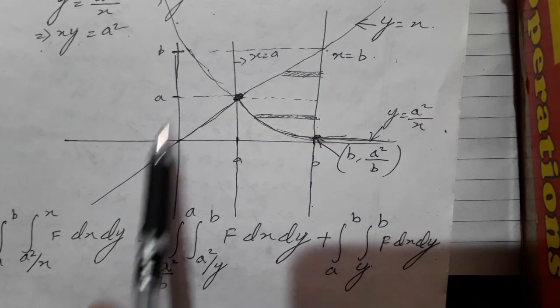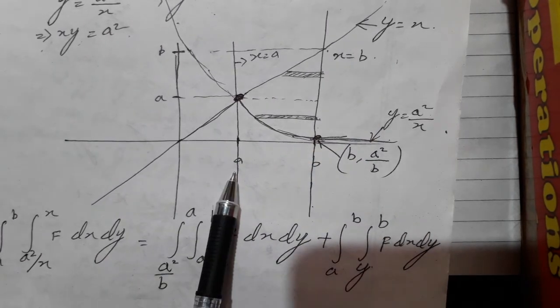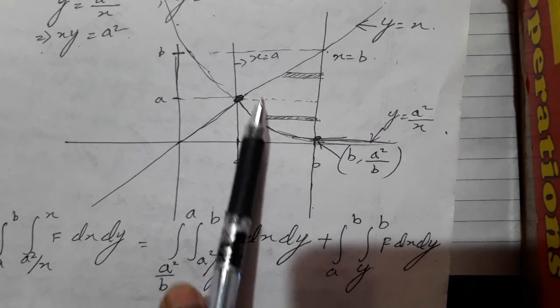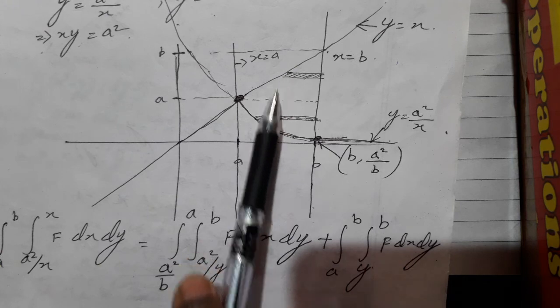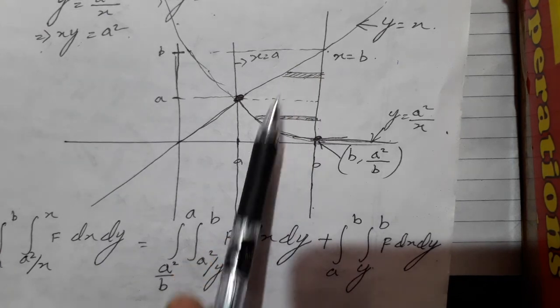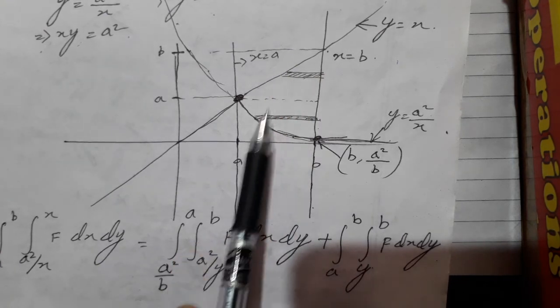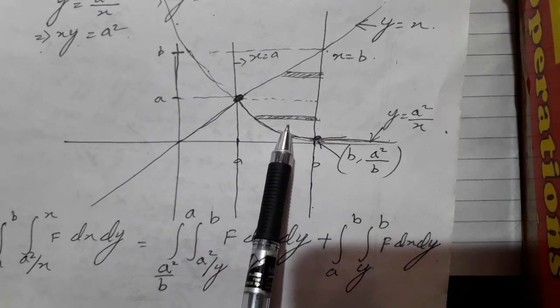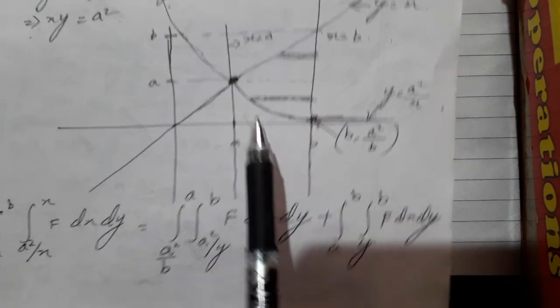This is y equal to x, x equal to a is this, and x equal to b is this. So this region is divided into two parts.